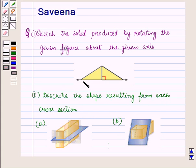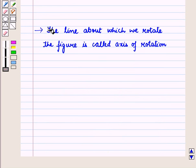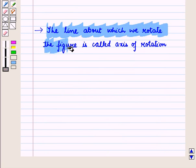Before starting the solution of this question, we should know some results. First, the line about which we rotate the figure is called the axis of rotation.